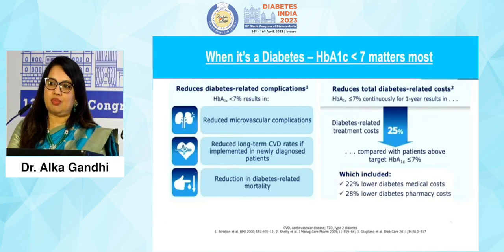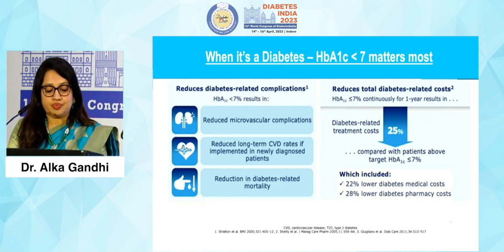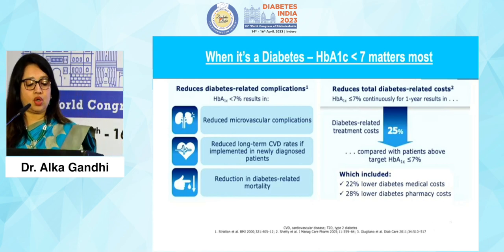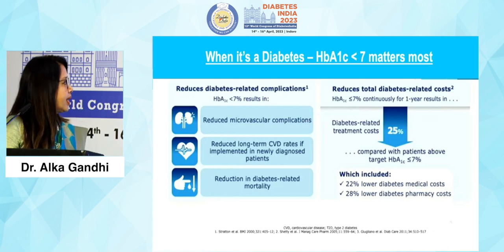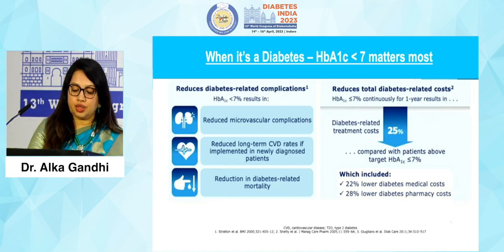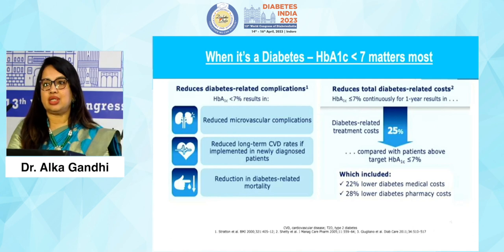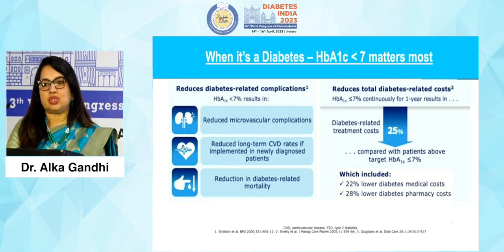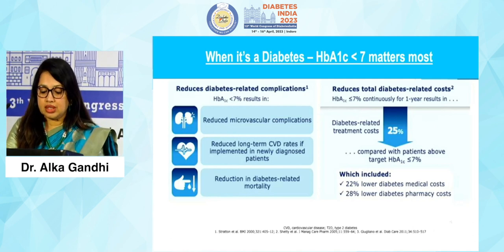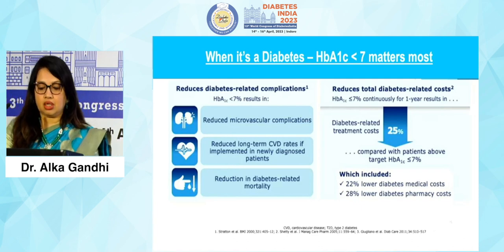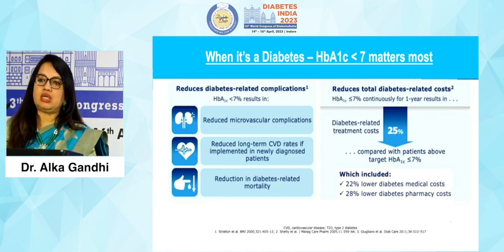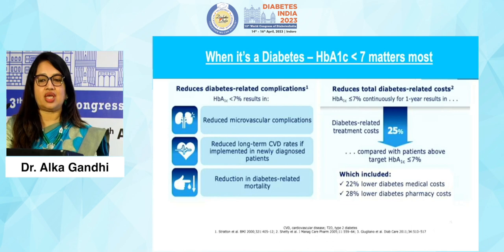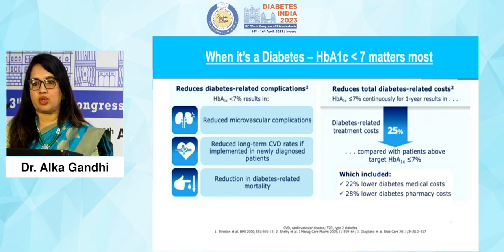When we are managing diabetes, what is most important? HbA1c less than 7. Why is it important? Because it reduces diabetes-related complications — reduced microvascular complications, reduced long-term CVD rates, and reduction in diabetes-related mortality. It also reduces diabetes-related cost: 22% lower diabetes medical cost and 28% lower pharmacy cost, so overall a 25% reduction in cost if the patient maintains an A1c target of less than 7 for at least more than one year.